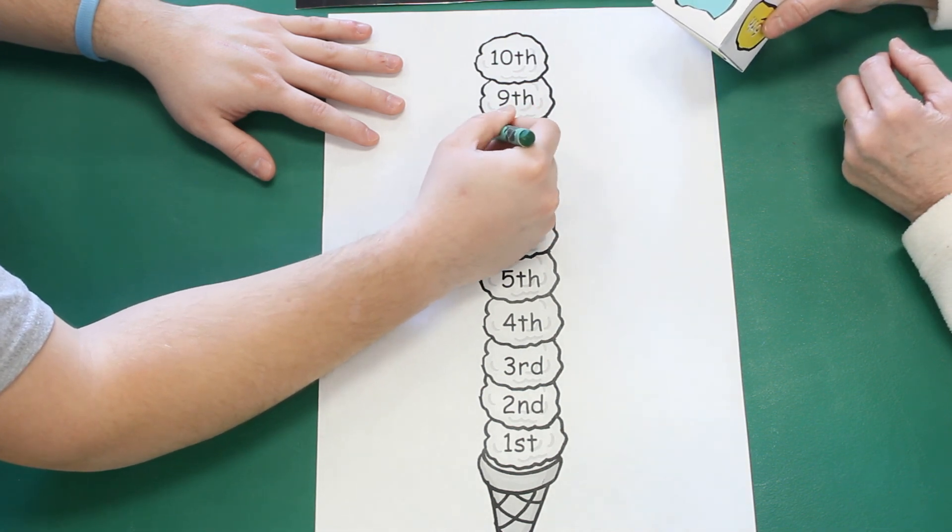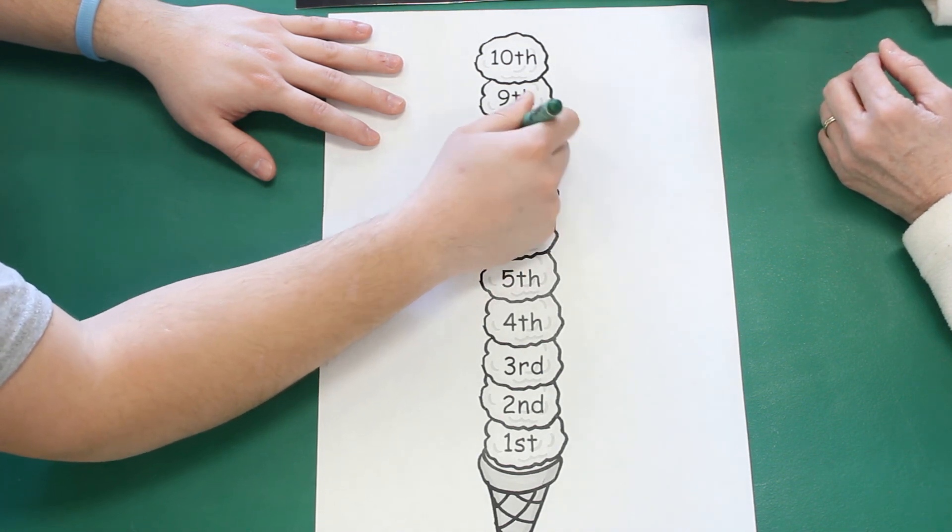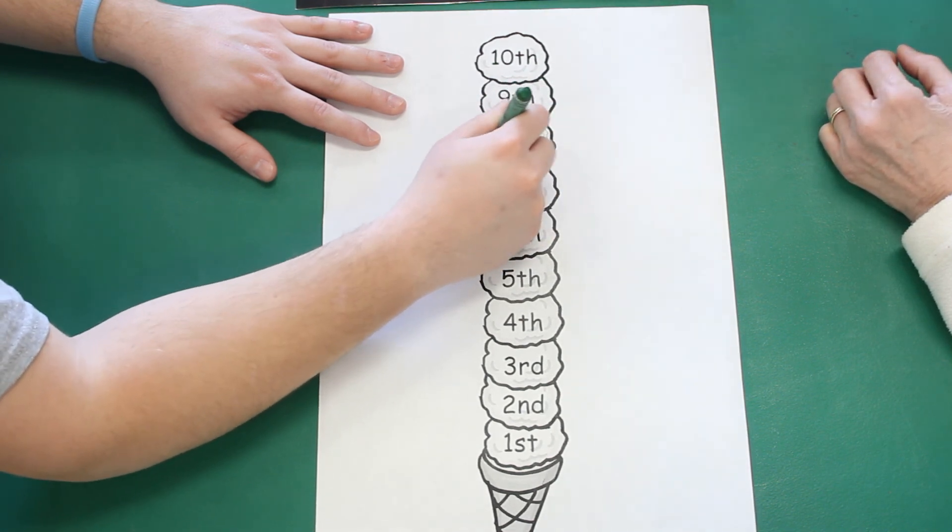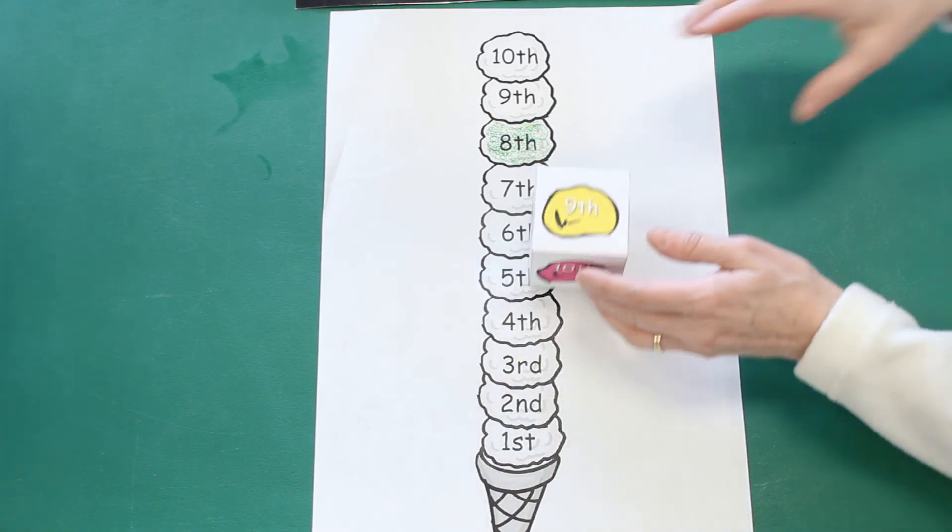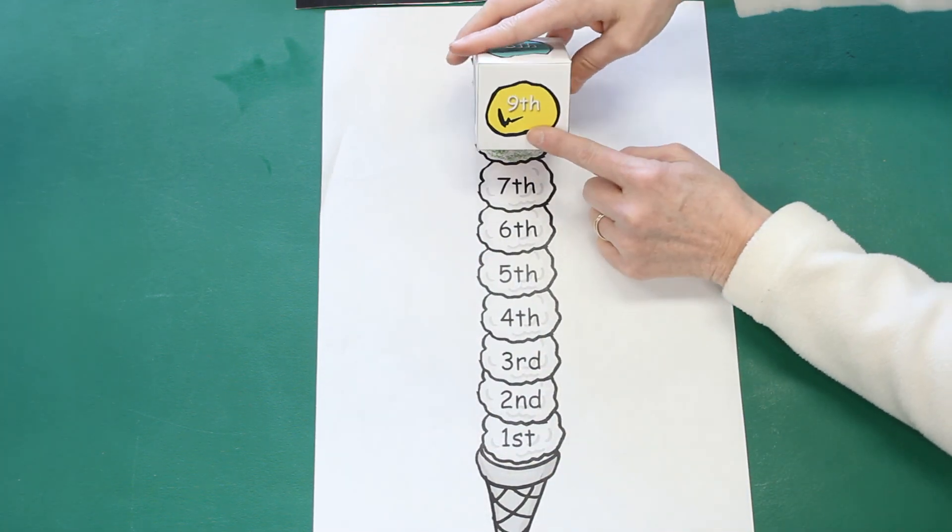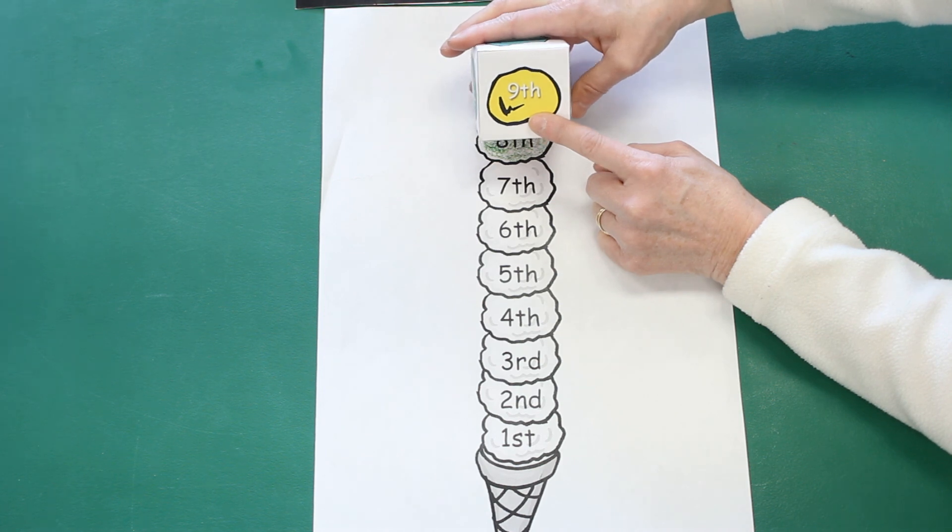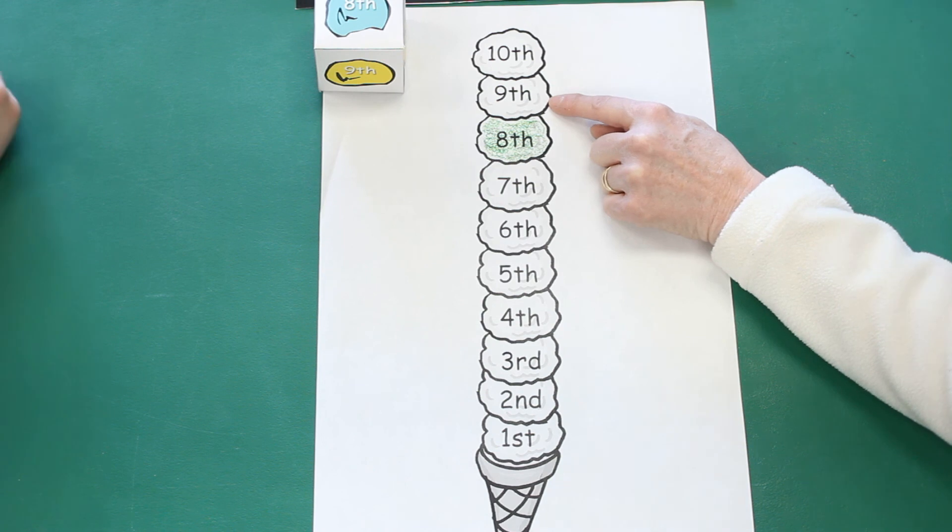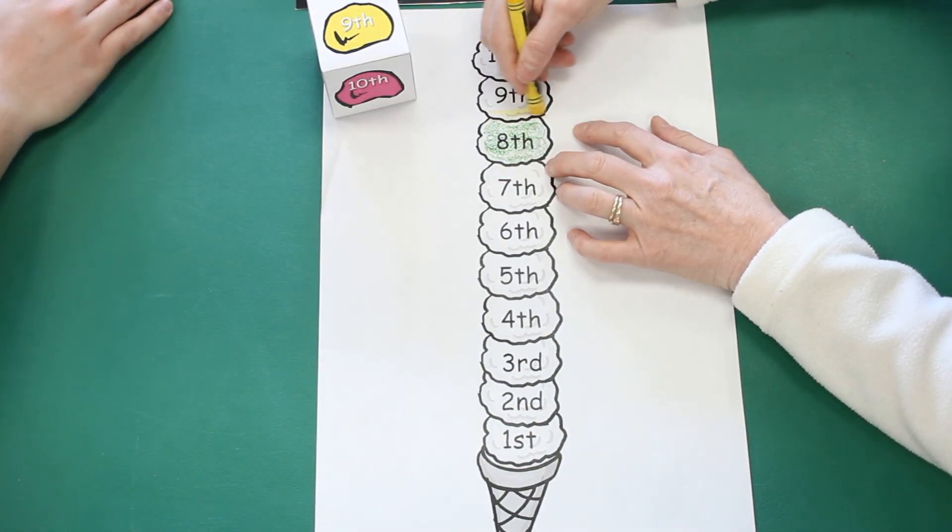And then Mrs. Reagan is going to roll the dice. Nice coloring Ethan. Mrs. Reagan got the ninth scoop of ice cream. I'm going to color the ninth scoop of ice cream yellow. I'm going to color that scoop of ice cream yellow.